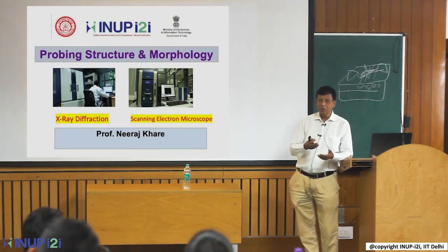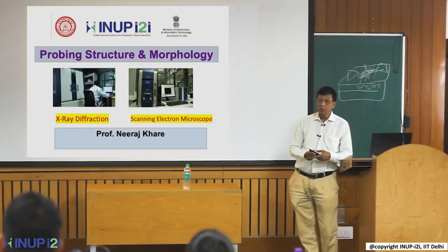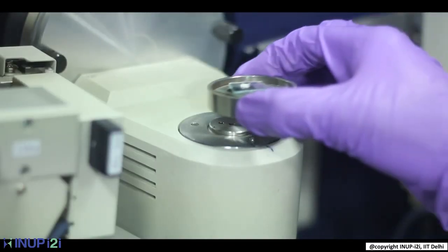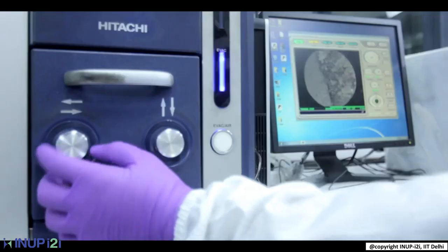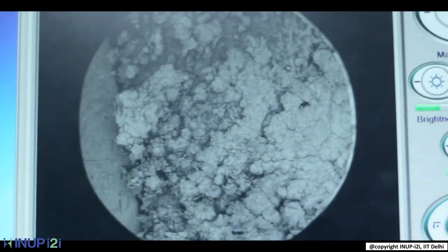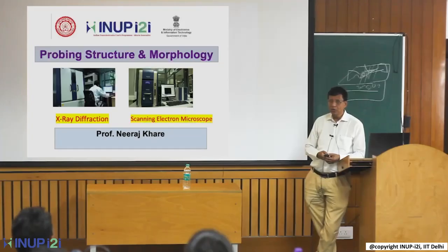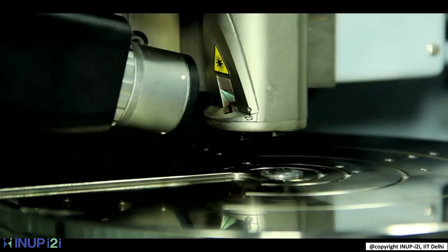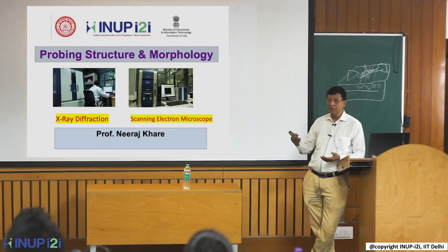But after that, what we insist — and we will emphasize this point tomorrow also — is that we want you to go ahead and try to make some device out of these materials. When you make a device, you have to do electrical characterization and more optical characterization, because ultimately the objective should be to use your research work for making devices, and to synchronize your research effort along the direction of national themes and goals so that the end point is societal benefit.